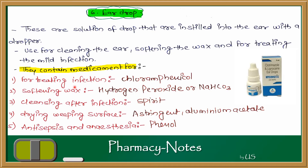Ear drops contain medicaments for different treatments. First, for treating infections — mostly chloramphenicol, an antibiotic, is used. Second, for softening wax — ear drops containing hydrogen peroxide and sodium bicarbonate are used.